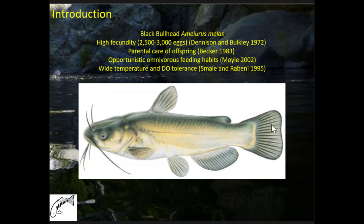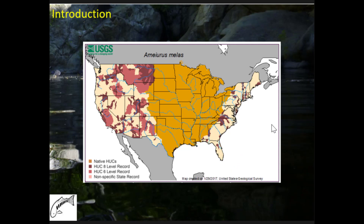I have found these fish in puddles with temps over 35 degrees Celsius and dissolved oxygen less than one milligram per liter, just hanging at the surface doing fine. You can see the native range of black bullhead in orange, and also the many areas it has been reported in on the USGS website. In Southern California, one of the primary reasons this fish gets introduced is as forage for largemouth bass, and I think that's probably the case in most of the West as well.